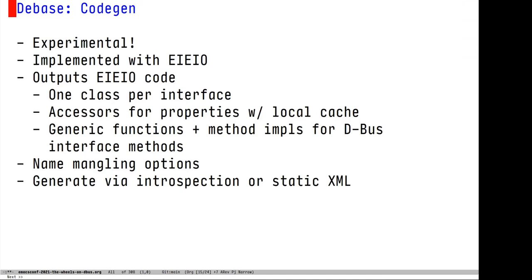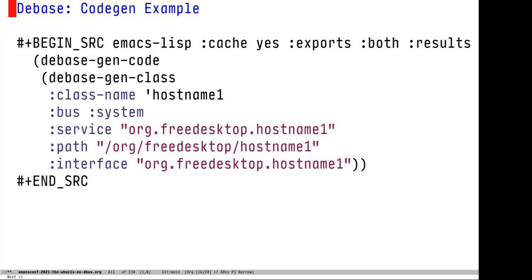dbase also has an experimental code generation feature. It outputs EIEIO code with one class per D-Bus interface. This includes accessors for all of its properties with an in-process cache, so if you read one property, you don't have to go back to the bus to read it again. It also outputs generic functions and method implementations for the D-Bus interface methods. It includes name mangling options so you can control how everything is named. You can generate the code either by introspecting a live system or providing an XML interface description, which is handy for non-interactive builds. It extends dbase-object, so the endpoint arguments are the same.